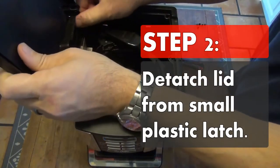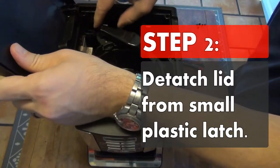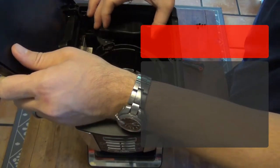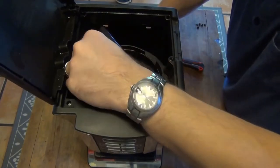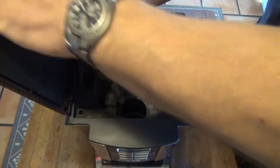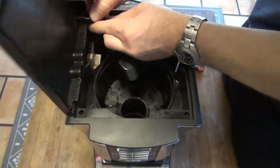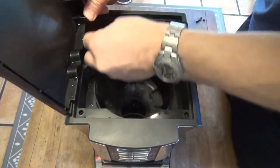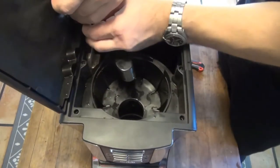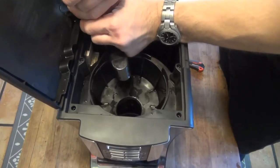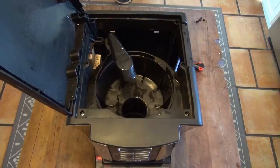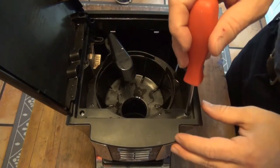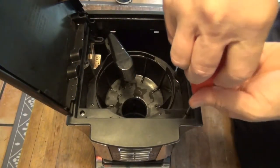Once you get them all out, the next thing you want to do is detach the lid of the coffee maker from a small plastic latch. The latch is in the back corner and you can just pull it out with brute force. It comes off fairly easily, just pops right off just like that.